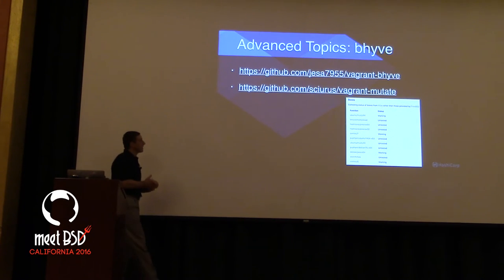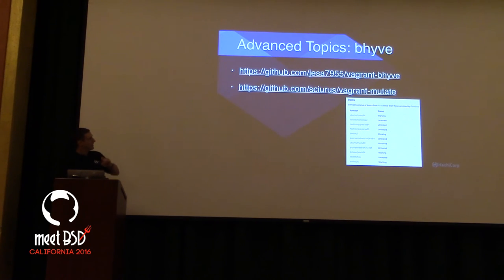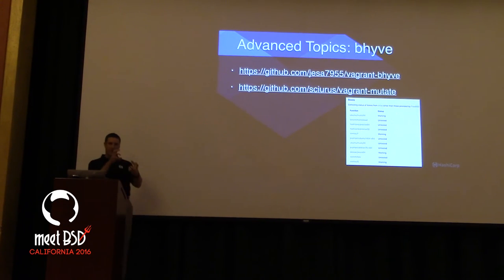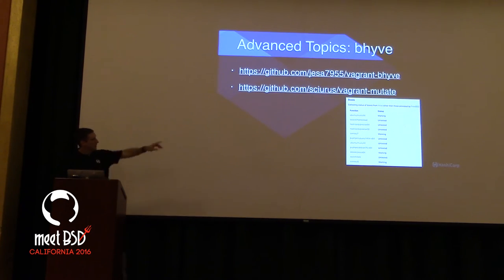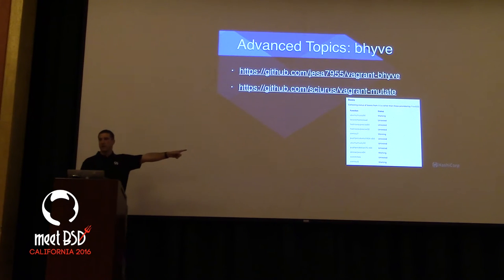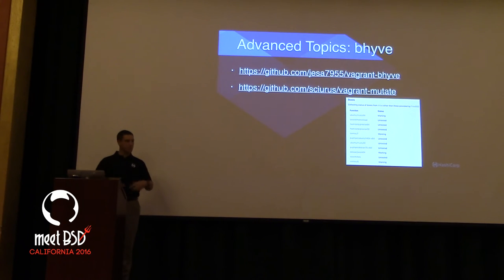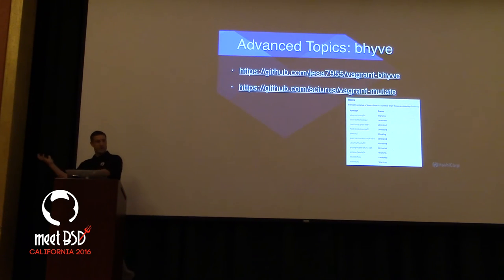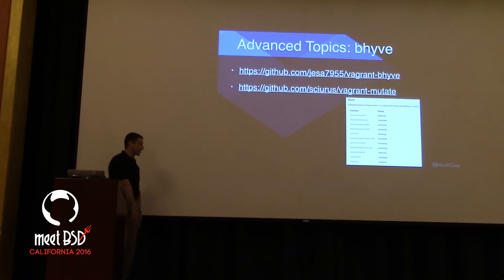Bhyve is coming — there's a lot of work that's been done, thanks to GSoC from last summer and Swills. He also wrote a vagrant-mutate to take Vagrant files and move them between libvirt and Bhyve. Bhyve support in Vagrant exists on FreeBSD and it's getting better. Bhyve is a little bit unapproachable unless you have a sidecar of shell scripts you use to initialize and bootstrap your local development environment when working inside of FreeBSD.